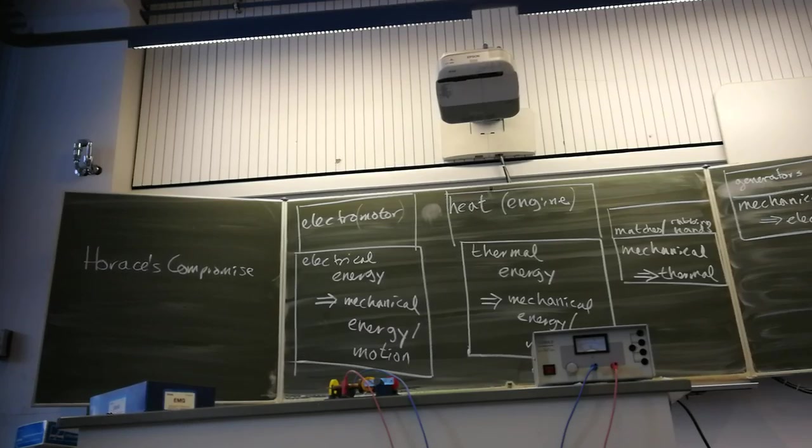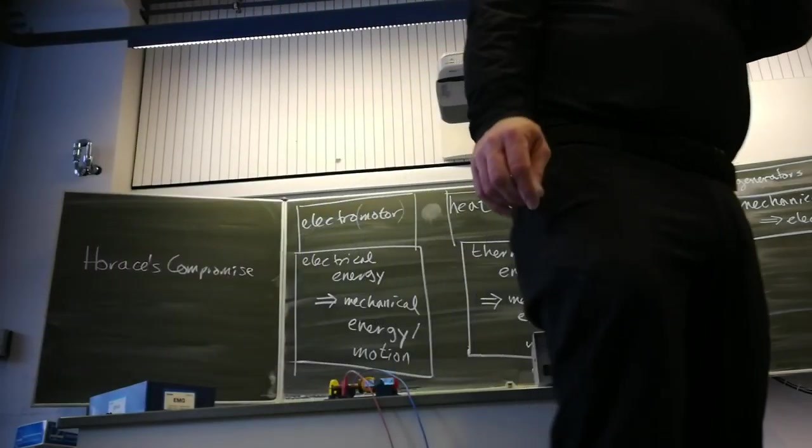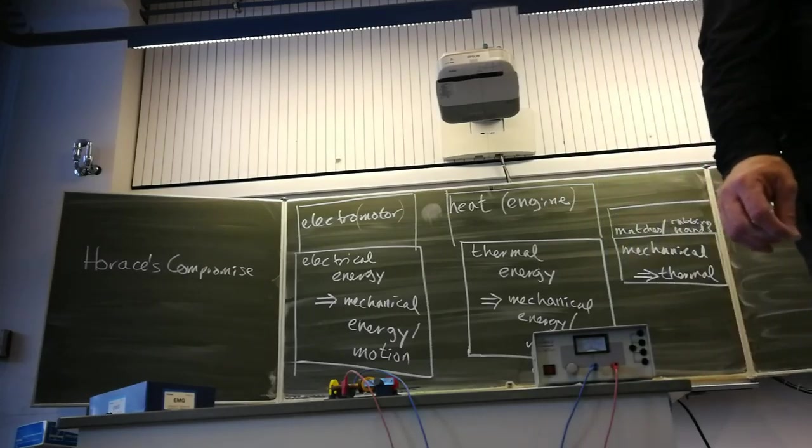We have now listed four different devices that take one type of energy and turn it into another energy, correct? How many possibilities are there when you have three types of energy? How many possibilities should there be? This is a math problem. Yeah, nine. That would be correct. Now some nerds might argue with you, like you can turn electrical into electrical energy.